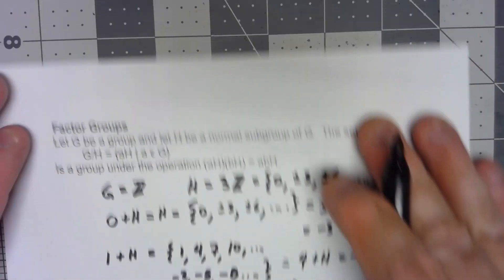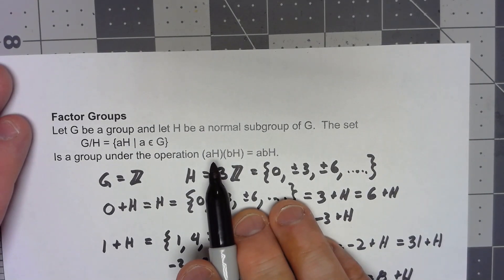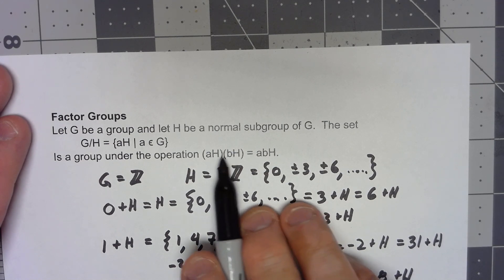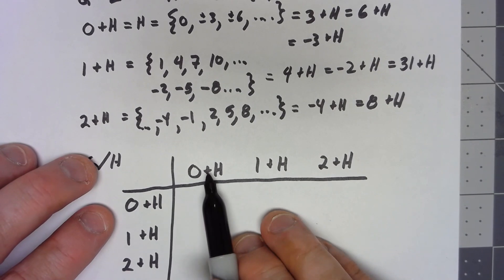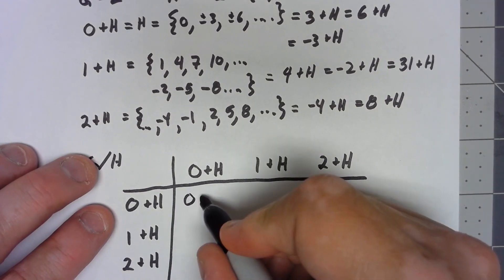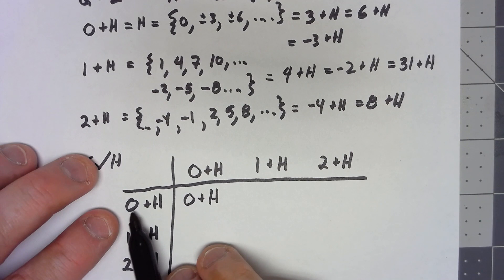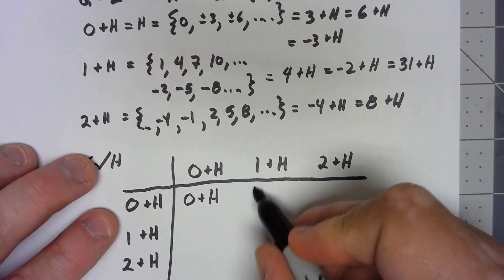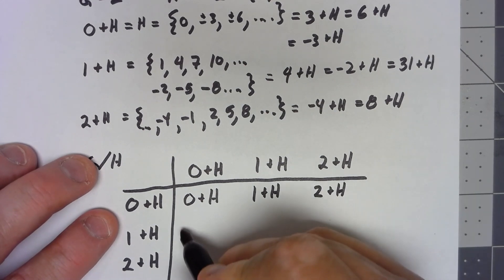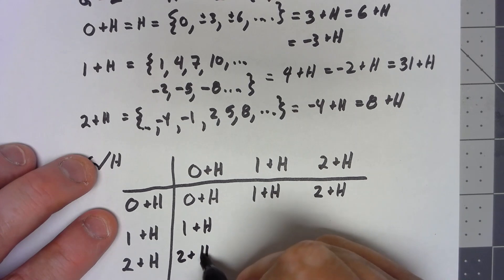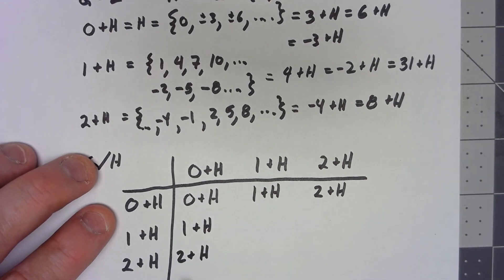And now this group operation that we defined is that to add the two cosets, we take that representative thing on the outside and add that according to our group operation. So here, 0+H times 0+H is 0+H. 0 plus 0 is 0. 0 plus 1 is 1, so this is 1+H. This is 2+H. 1+H, 2+H. So this 0+H is the identity of this factor group.